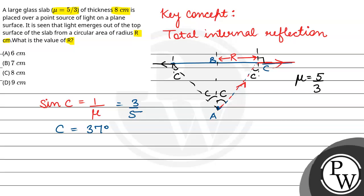then we apply tan c. If we apply tan c, c is critical angle, then we apply r by 8, or r by 8, tan 37 degrees equals 3 by 4. 3 by 4 equals to r by 8. Here c equals 37 degrees.